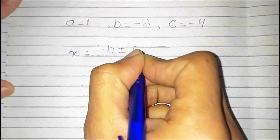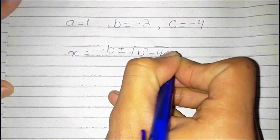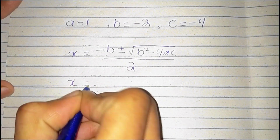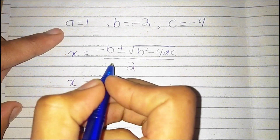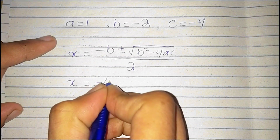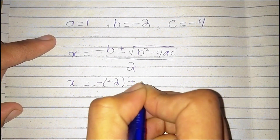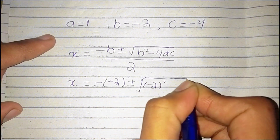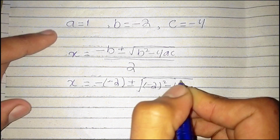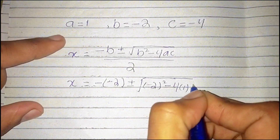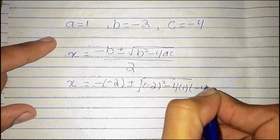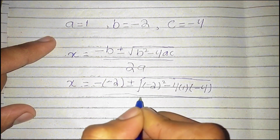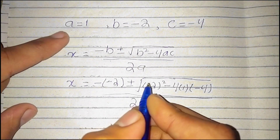By the quadratic formula, x is equal to minus b plus or minus square root of b squared minus 4ac, divided by 2a. Putting in the values: b is equal to minus 2, a is equal to 1, and c is equal to minus 4, divided by 2 times a, which is 1.